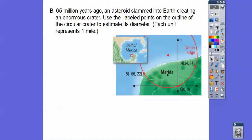65 million years ago, an asteroid slammed into Earth, creating an enormous crater. And so we're going to use the labeled points on the outline of the circular crater to estimate its diameter.